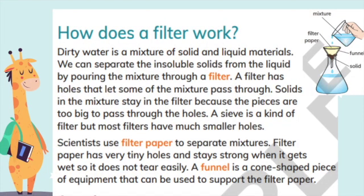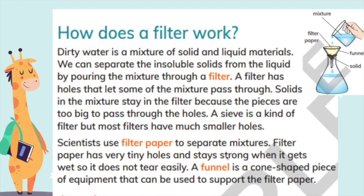How does a filter work? Dirty water is a mixture of solid and liquid materials. We can separate the insoluble solids from the liquid by pouring the mixture through a filter. A filter has holes that let some of the mixture pass through. Solids stay in the filter because the pieces are too big to pass through the holes. A sieve is a kind of filter, but most filters have much smaller holes. Scientists use filter paper to separate mixtures. Filter paper has very tiny holes and stays strong when it gets wet, so it does not tear easily. A funnel is a cone-shaped piece of equipment that can be used to support the filter paper.